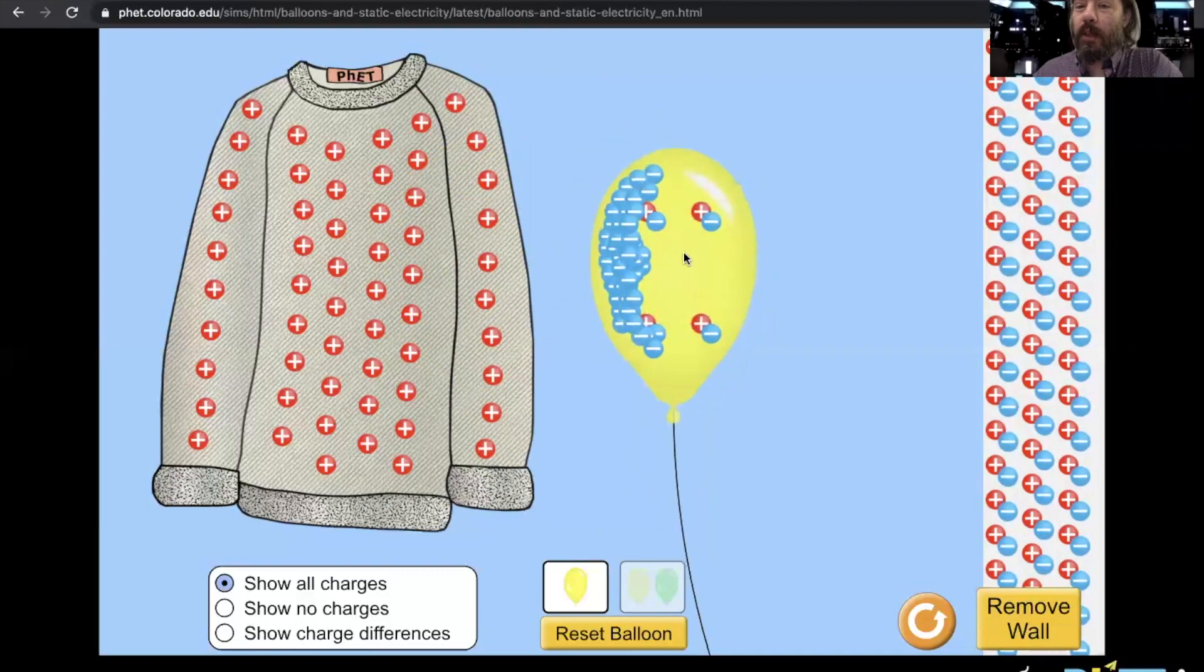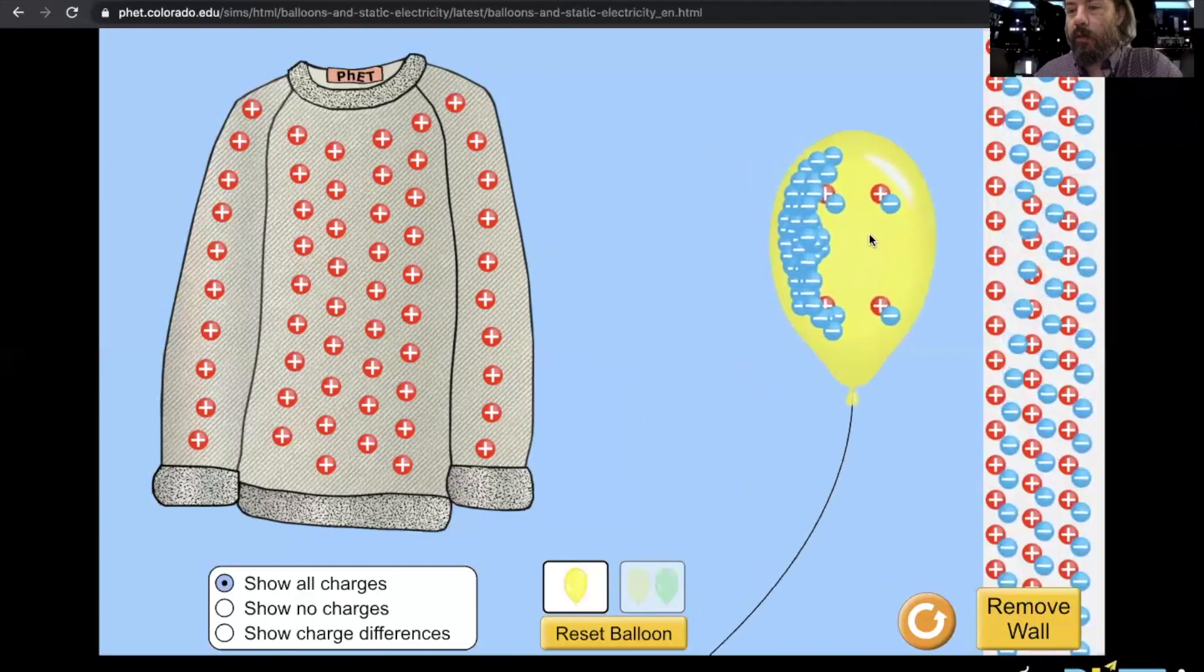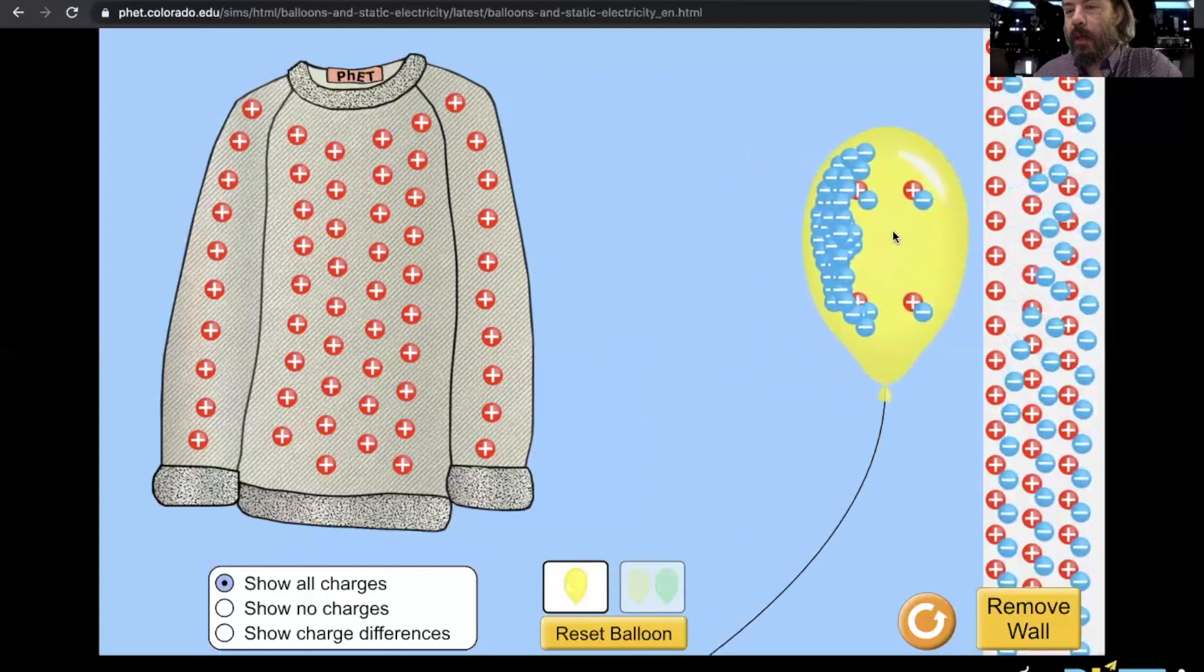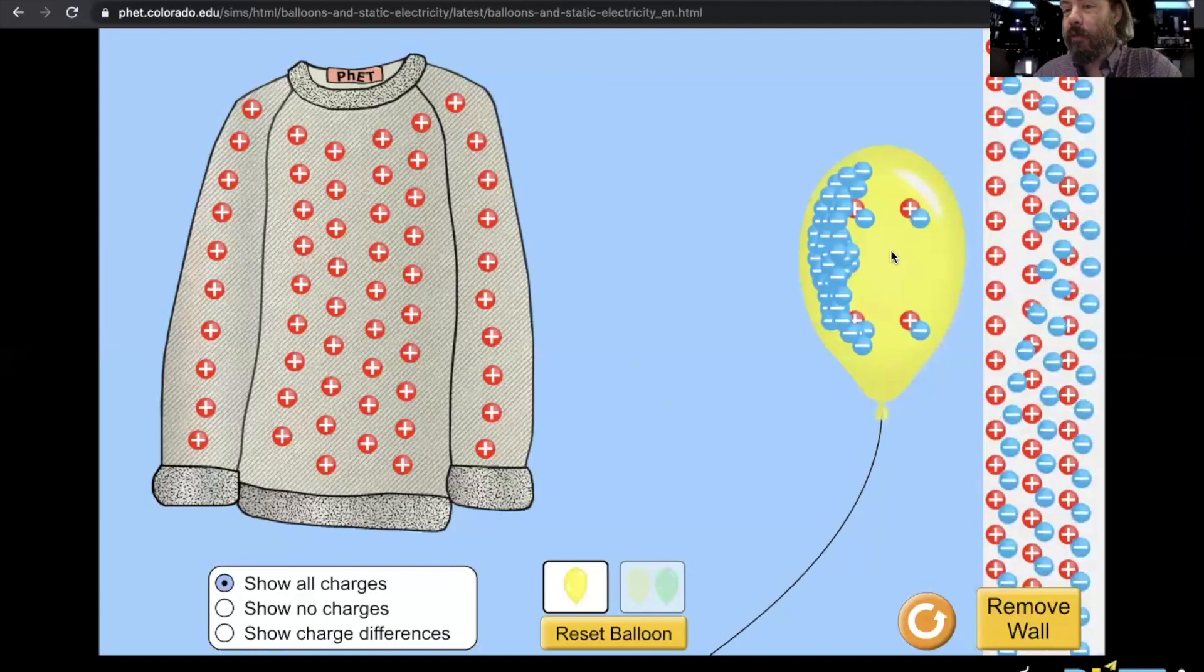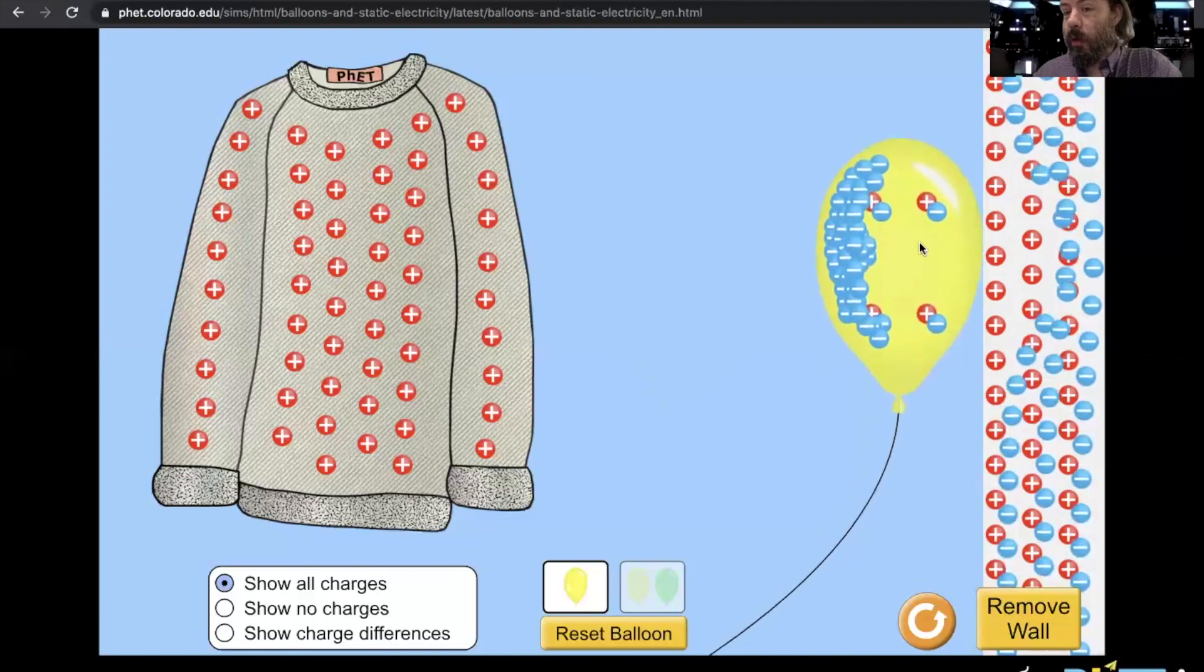Now here's something that's really interesting, though. The balloon is negatively charged. Watch me bring it to the wall. Watch what happens to those negative charges in the wall. So it actually pushes the negative, so like charges repel, so it pushes the electrons in the material away from the balloon, which means in that local area, we got positive. So positive and negative opposites attract, the balloon sticks to the wall.